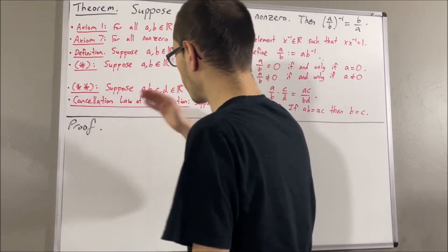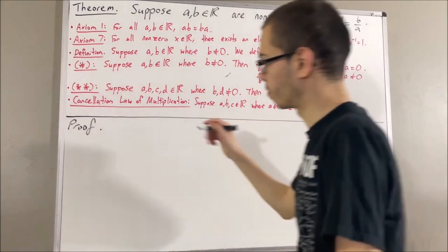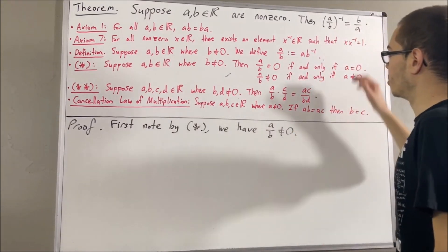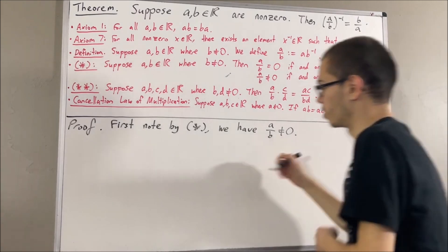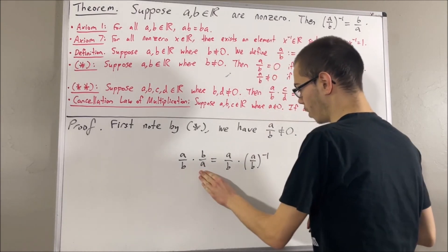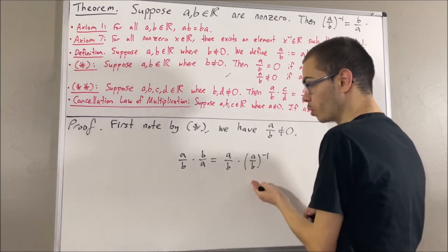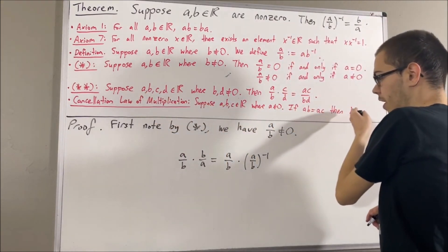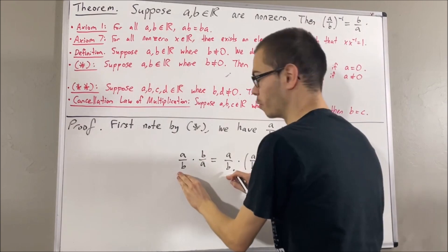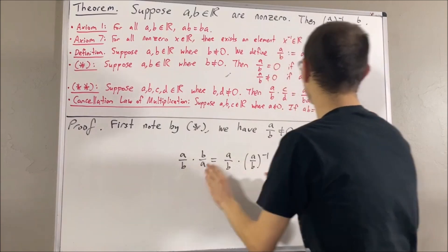To start with the proof, let's first note by star, we know that A over B is non-zero. Now, the approach we're going to use to show that these two are equal is as follows. We're going to show that A over B times B over A is equal to A over B times the reciprocal of A over B. From here, we can apply the cancellation law of multiplication, and since A over B is not equal to zero, we can cancel out the A over B's. And so we're left with B over A equals the reciprocal of A over B, which is exactly what we want.